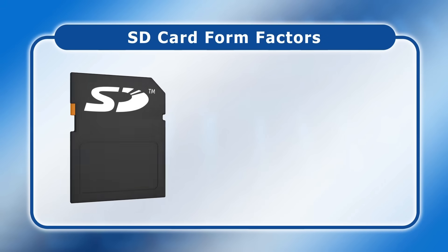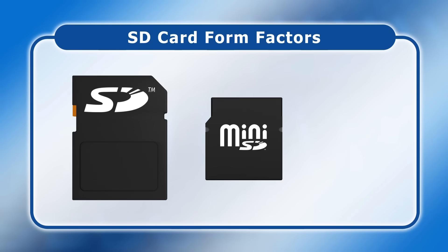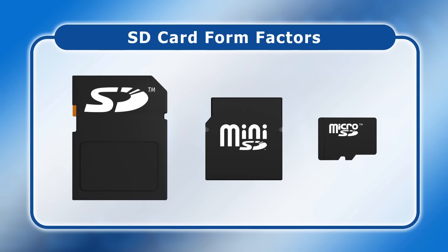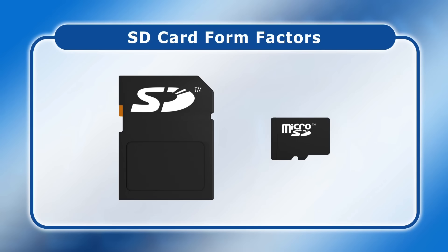In 1999, the first SD cards were what we now call standard size. Smaller mini SD cards then arrived in 2003, followed by even smaller micro SD cards in 2005. Today, mini cards are rare, with most devices using either standard or micro.